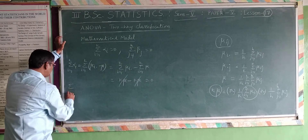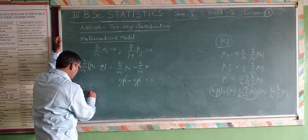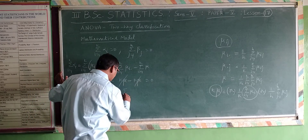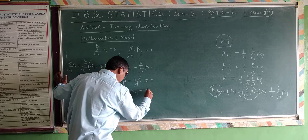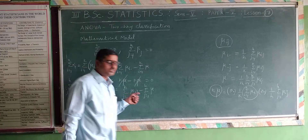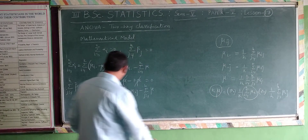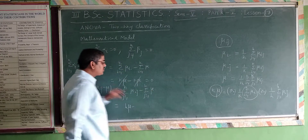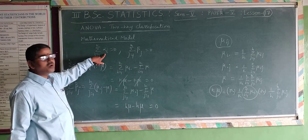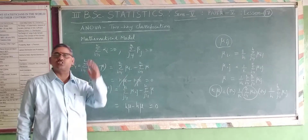Similarly, summation j equals 1 to h of beta j equals 0 can be proved. Since beta j equals mu dot j minus mu, taking summation j equals 1 to h gives summation j equals 1 to h of mu dot j, minus summation j equals 1 to h of mu. Summation j equals 1 to h of mu dot j equals h times mu, and since mu is a constant, summation j equals 1 to h of mu equals h times mu. Therefore h times mu minus h times mu equals 0. So summation j equals 1 to h of beta j equals 0 is proved.